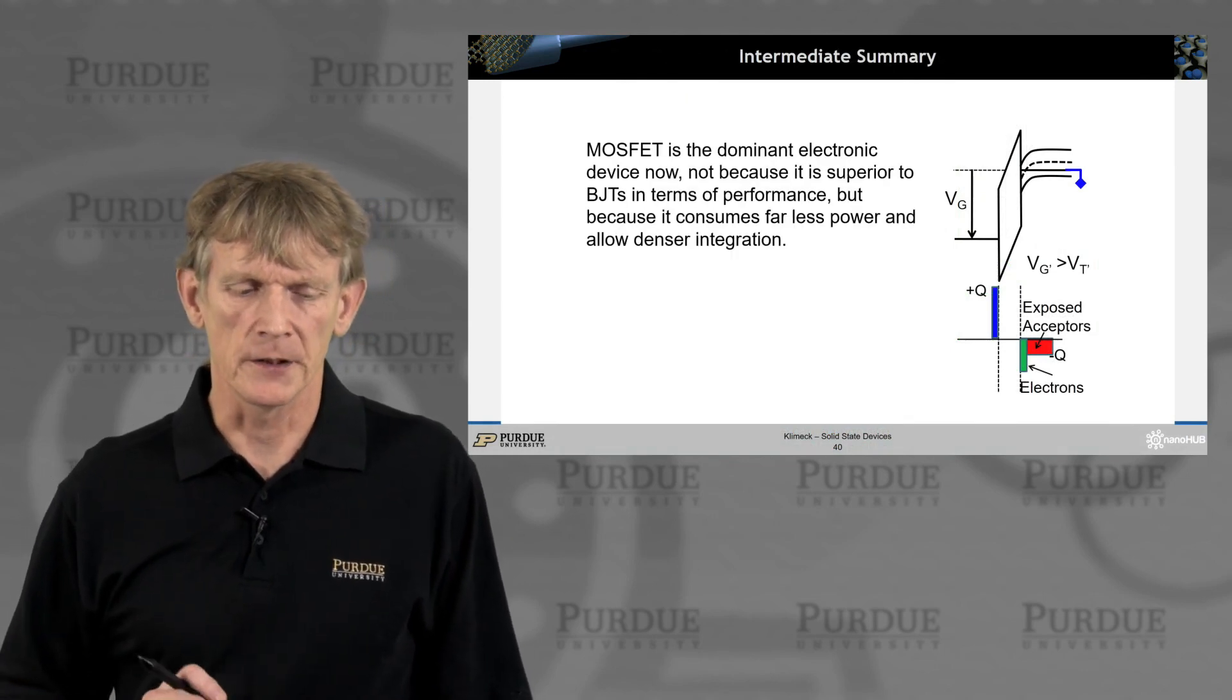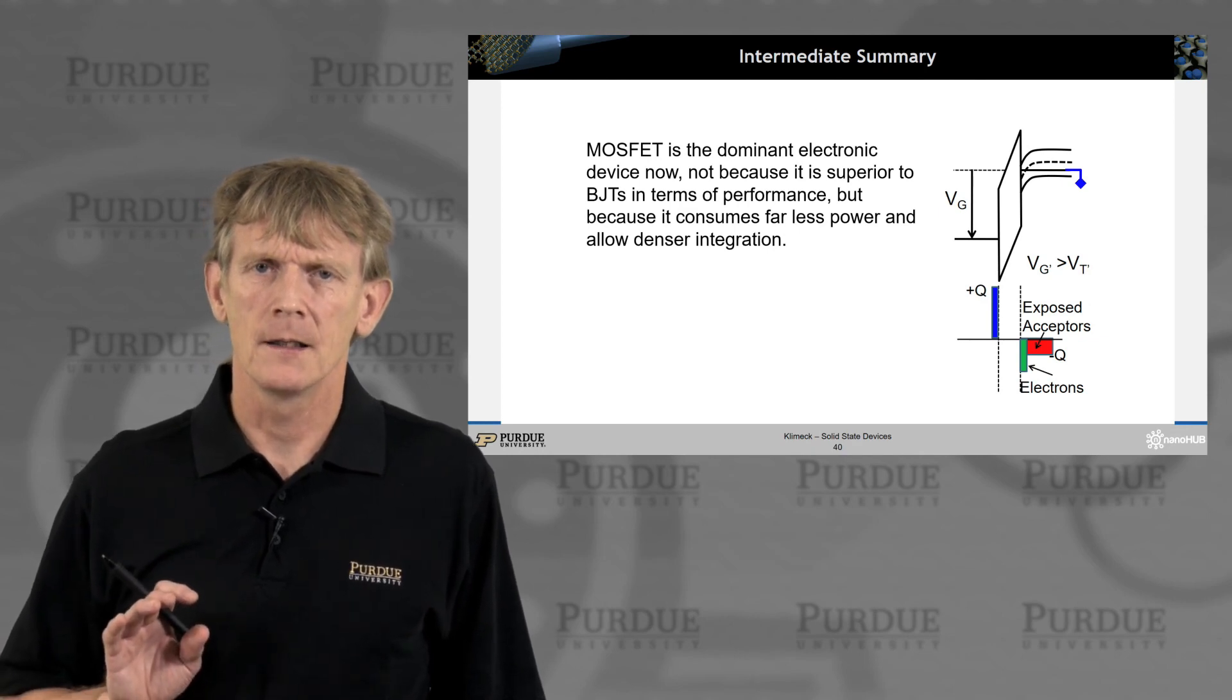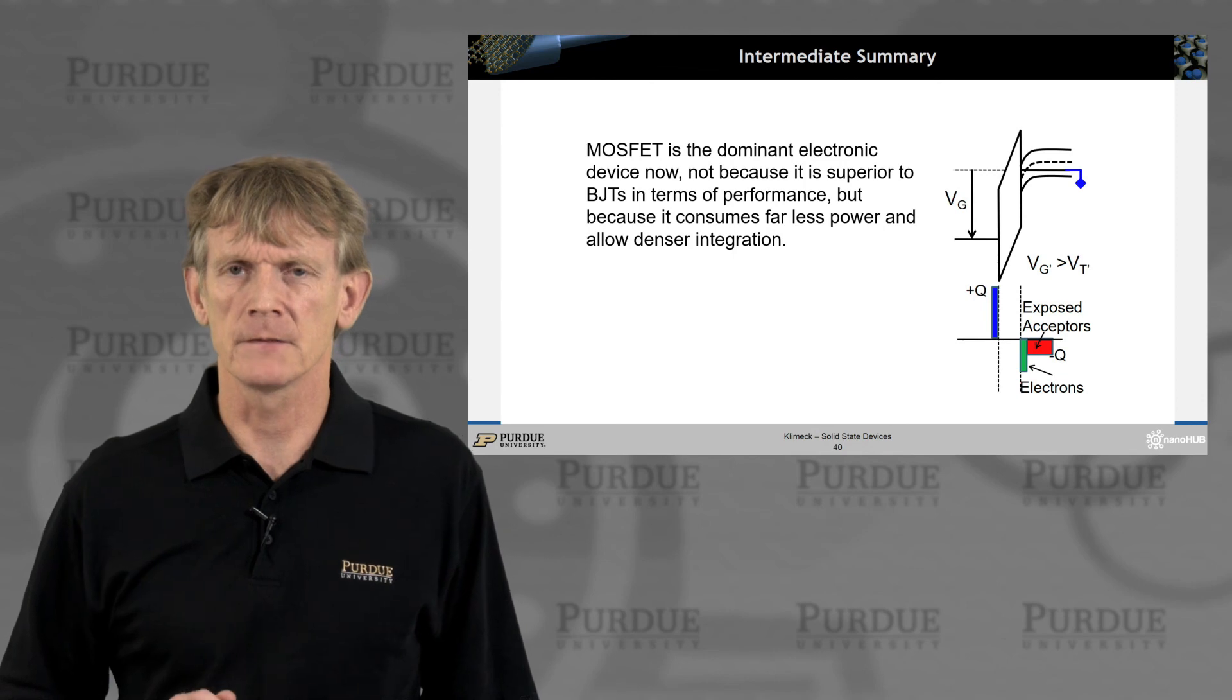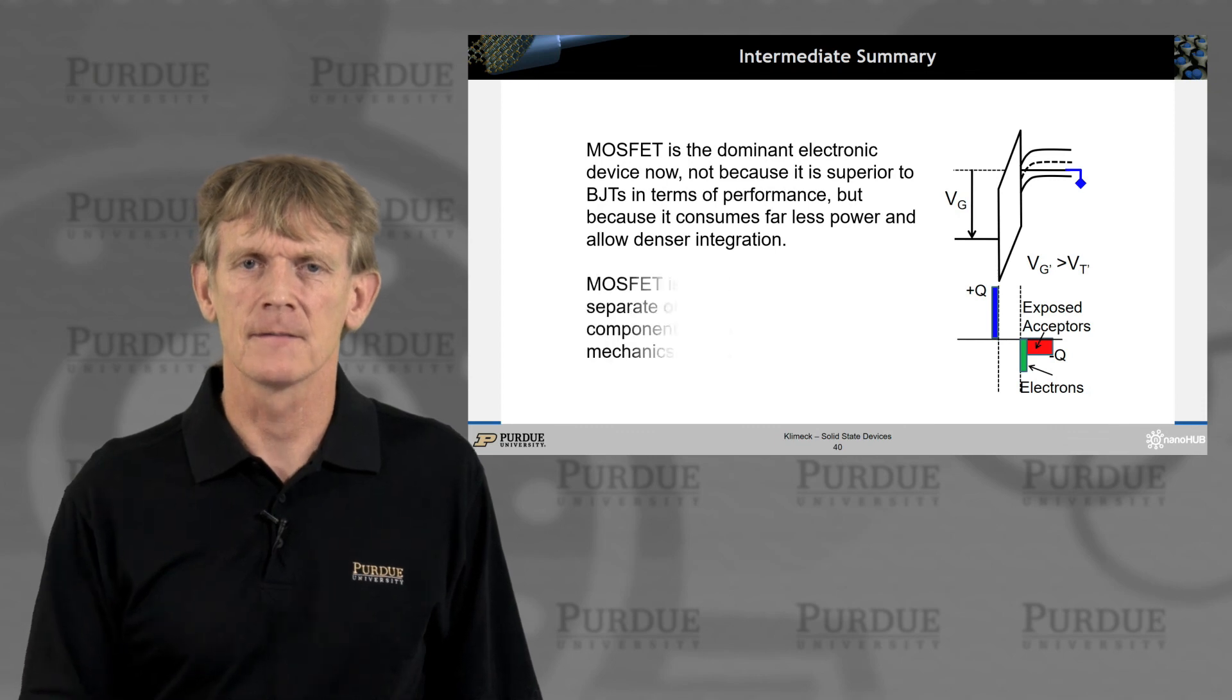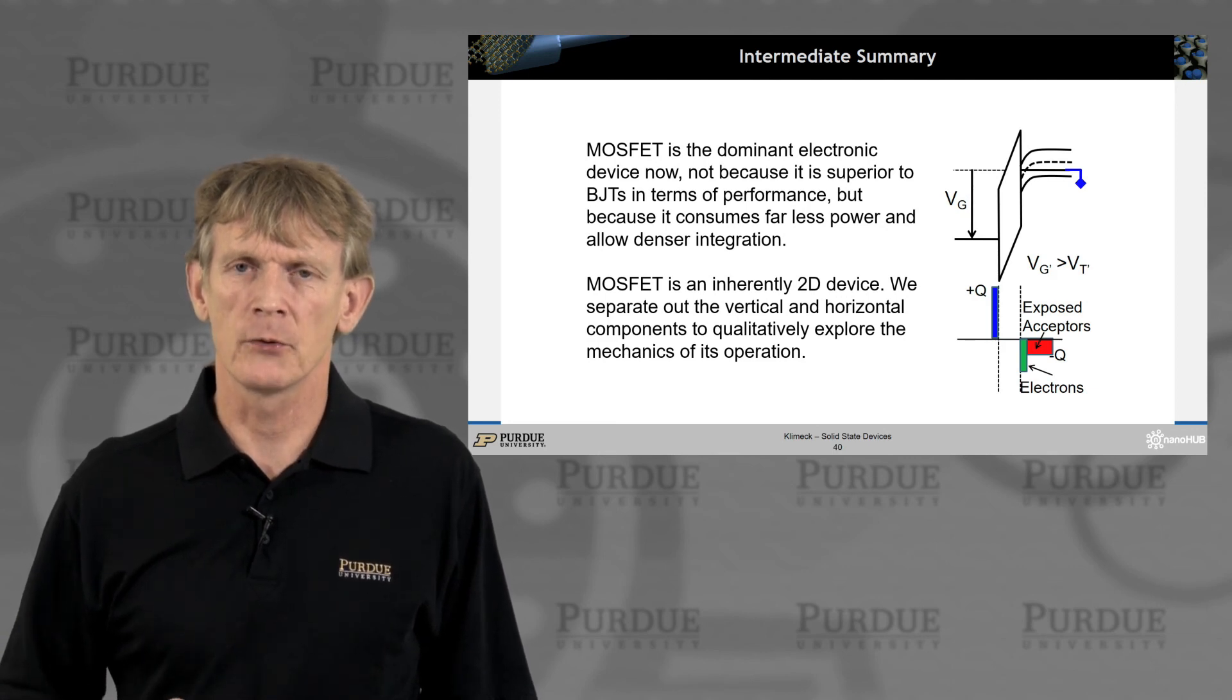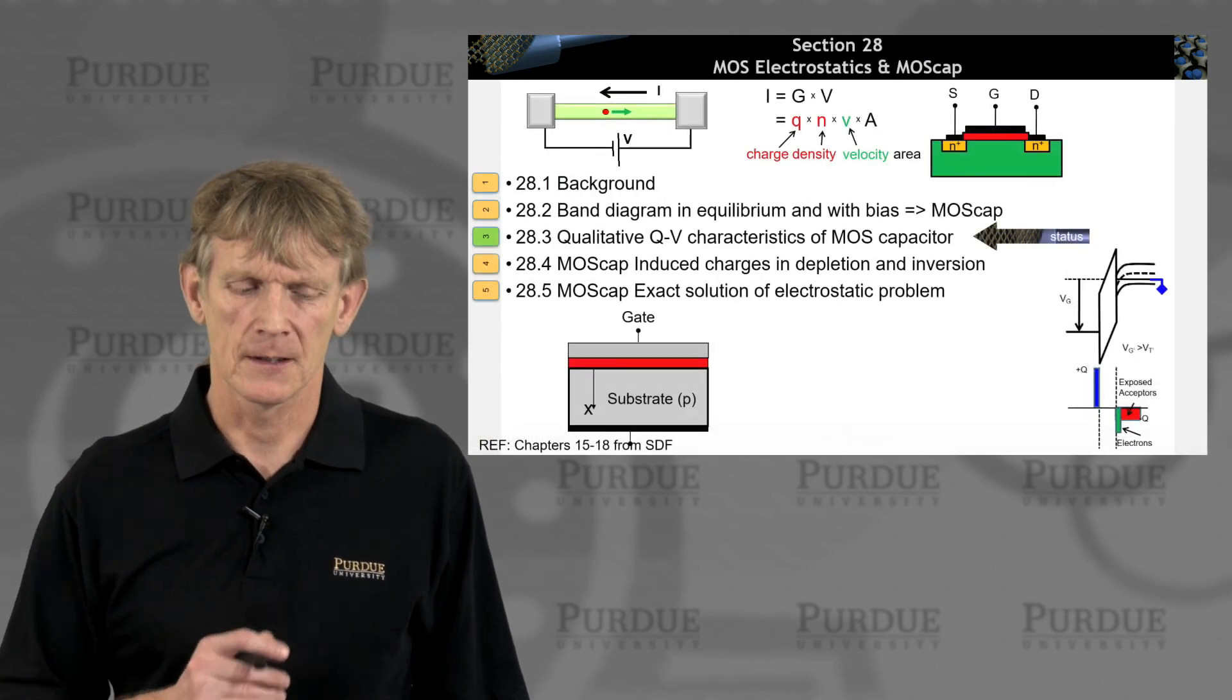So let's have an intermediate summary. MOSFET is a dominant device now, not because it has superior device performance overall, but because it consumes less power. And we haven't delved into the details of that. We'll do that in the next few slides. But we need to understand first on how is power consumed in these devices. And it's ultimately a 2D device, and we'll get to that in the next section as well. Here, we've just sketched a 1D performance of a surface potential and how we have three regions of device performance.